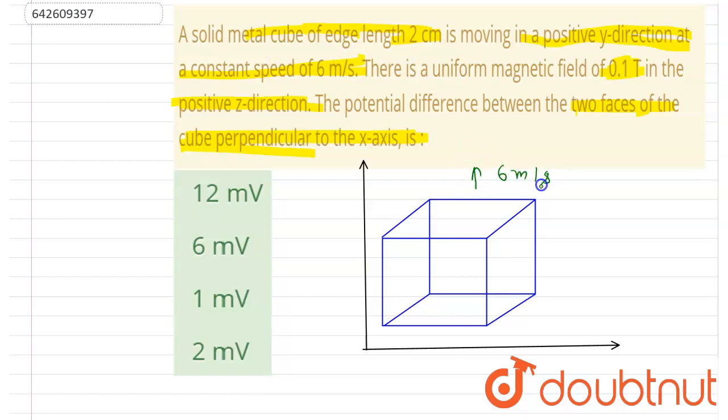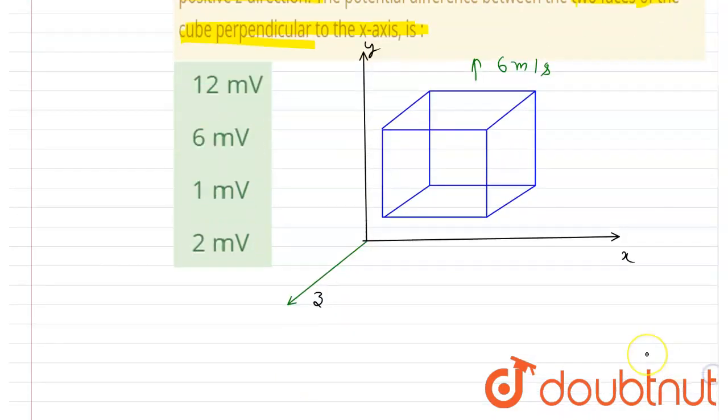So this is the velocity, and it is also given there is a uniform magnetic field of 0.1 tesla in positive z direction. So in this direction there is a uniform magnetic field, and this direction is z direction. Now if you imagine in 2D, this cube is moving in upward direction, and there is a magnetic field out of the plane.